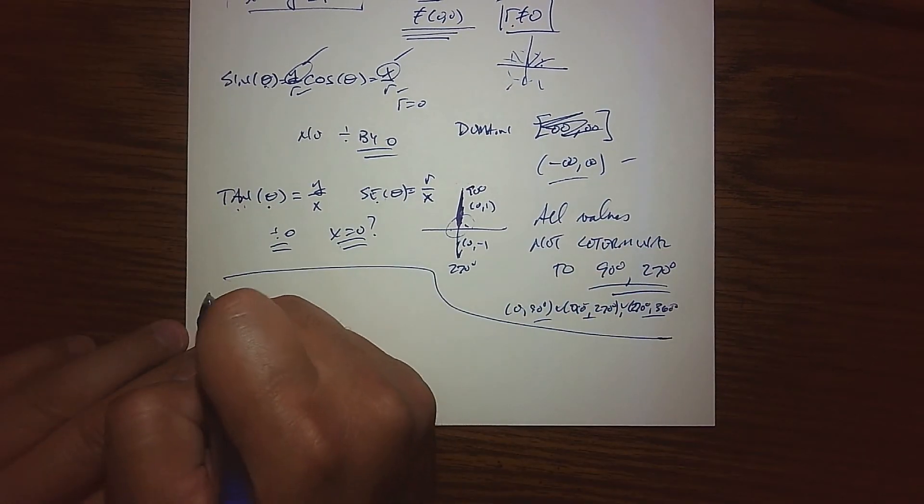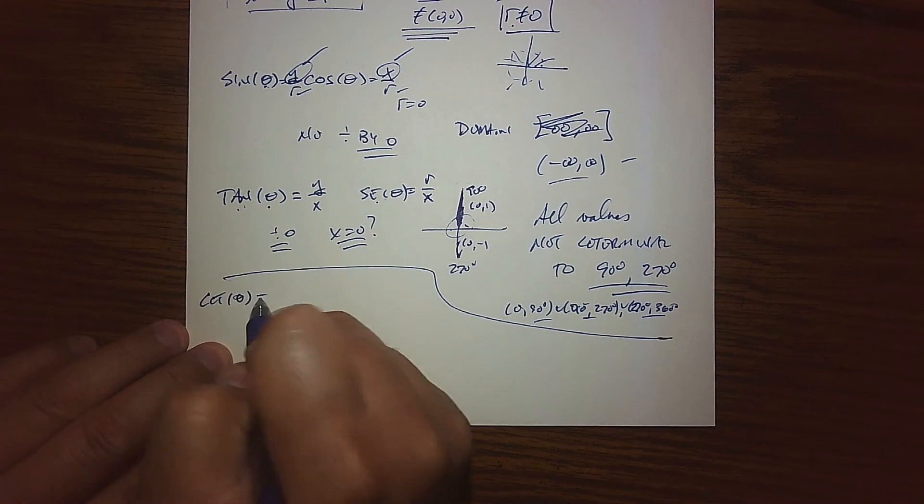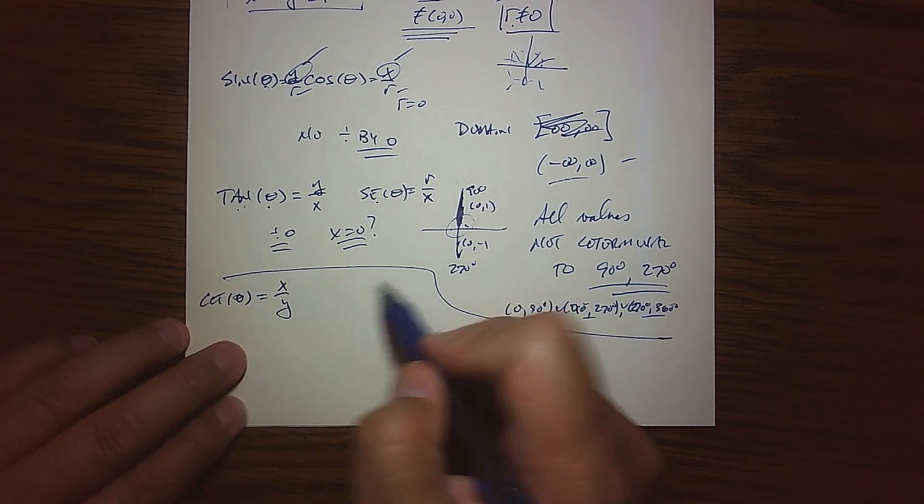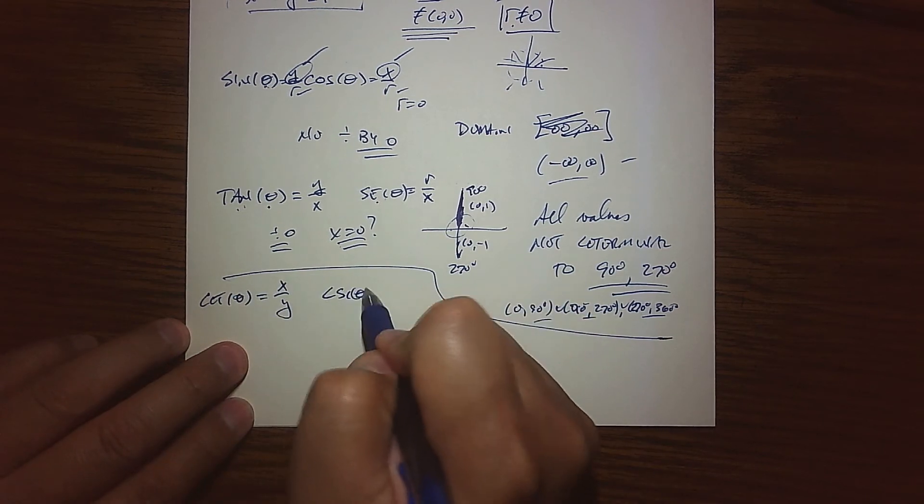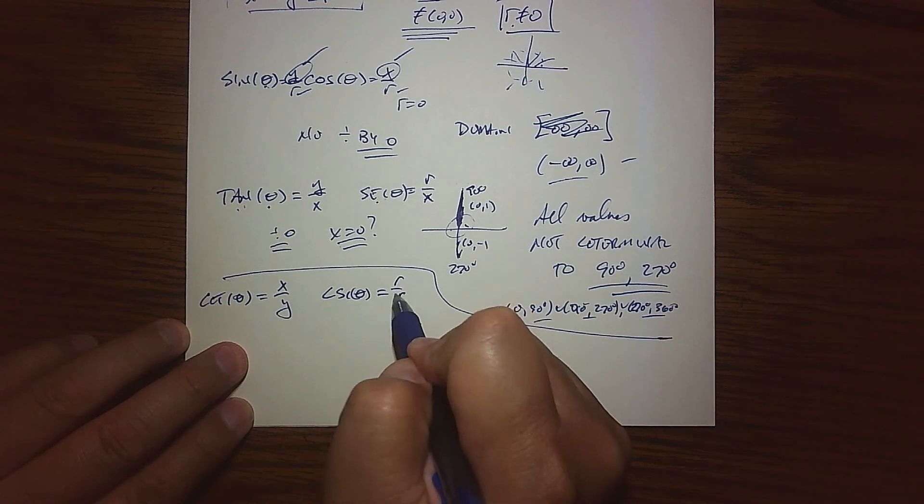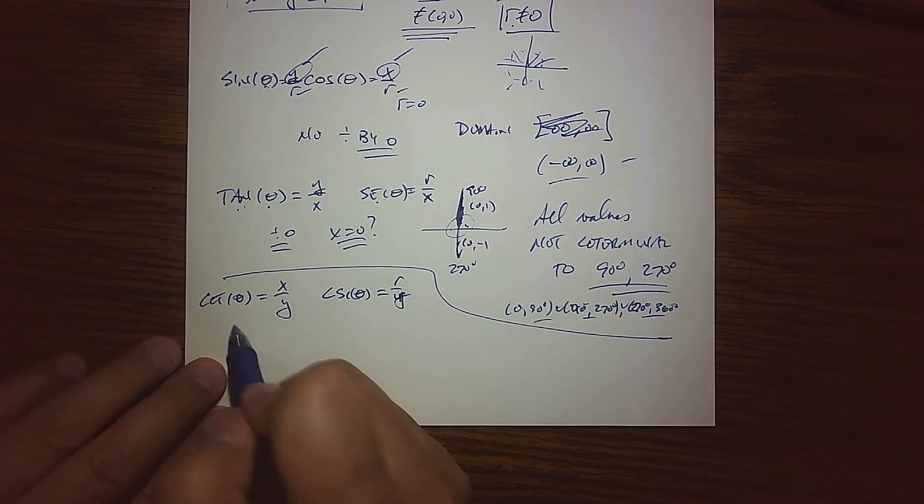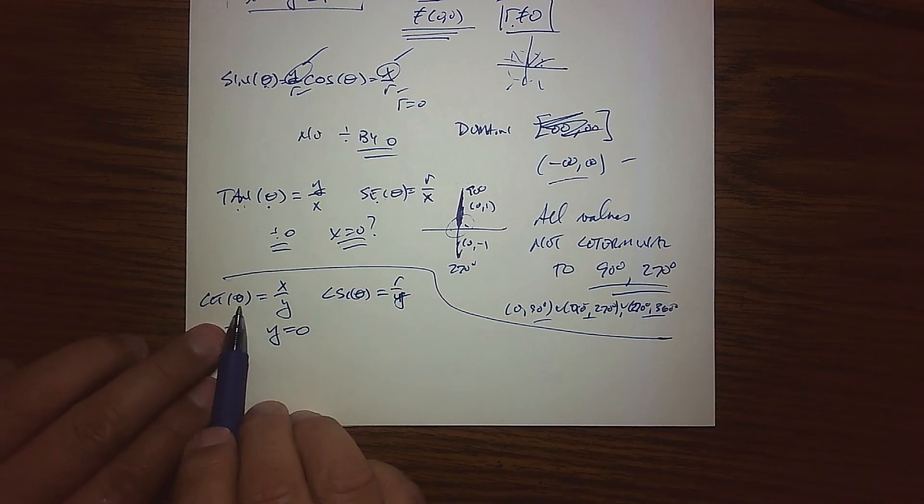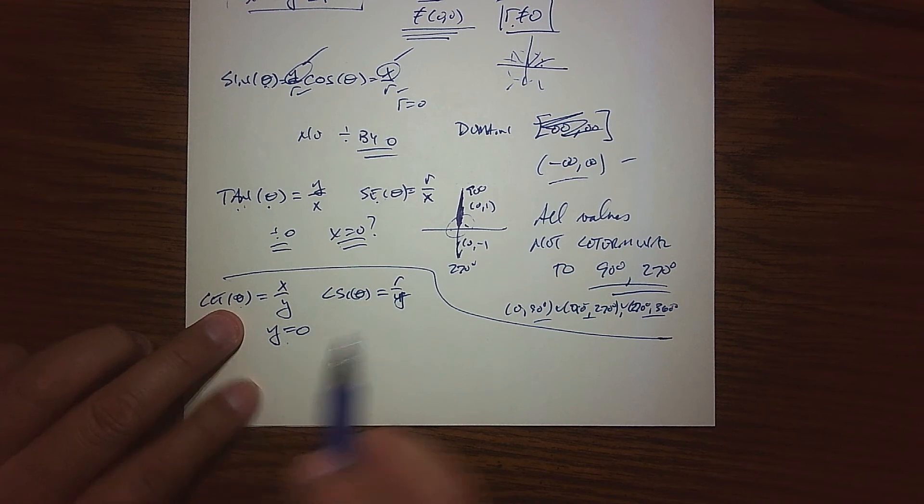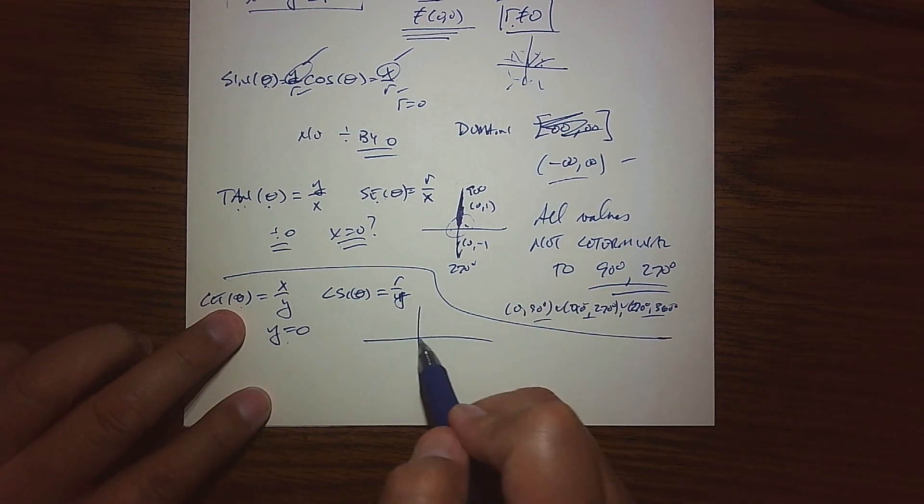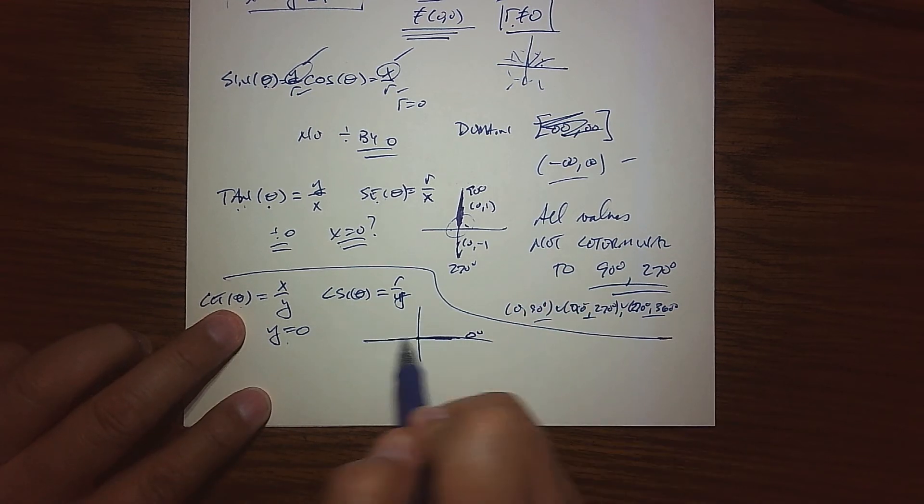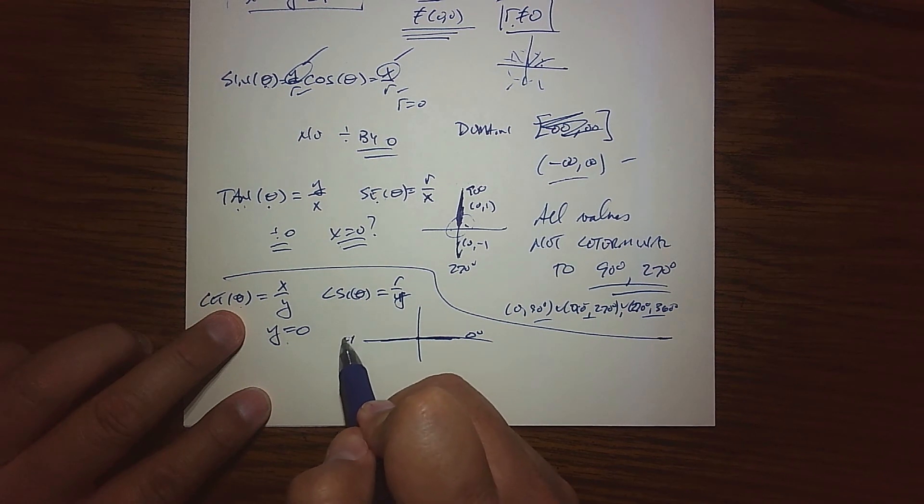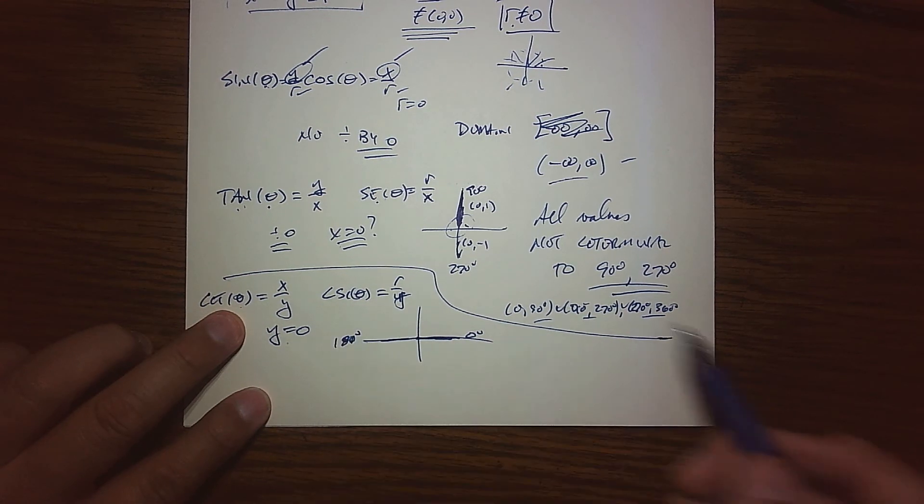Of course, that brings the next two. We've got cotangent, which is defined to be X over Y, and we've got cosecant, which is defined to be R over Y. Of course, the division by zero here is when is Y equal to zero. We've got to avoid the angle values that force Y equal to zero.